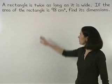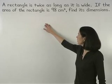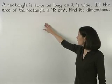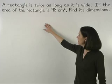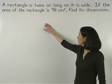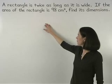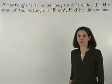A rectangle is twice as long as it is wide. If the area of the rectangle is 98 square centimeters, find its dimensions.